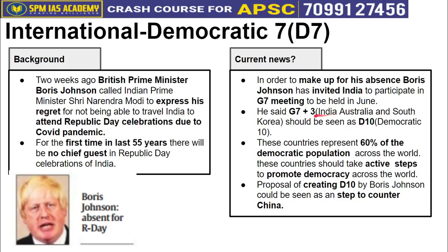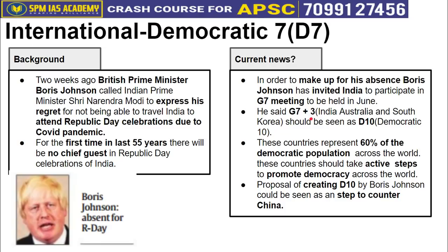India is not an original member of the G7 (Group of Seven countries), but Boris Johnson invited India to participate and proposed extending G7 to G7 Plus 3 — similar to how ASEAN countries have a Plus 8 arrangement in the East Asia Summit. The additional three countries proposed are India, Australia, and South Korea — making the group known as D10.